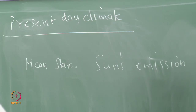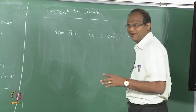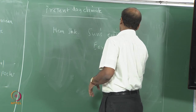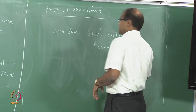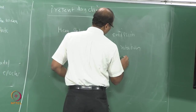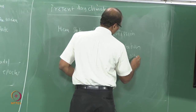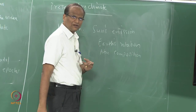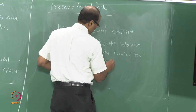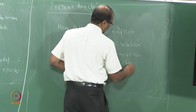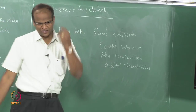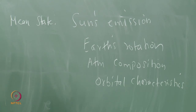Second, earth's rotation. Third, atmospheric composition. The orbital characteristics of the earth's rotation — its speed, axis tilt. Then there are various other factors such as albedo.